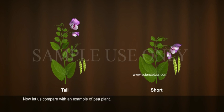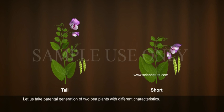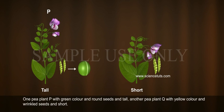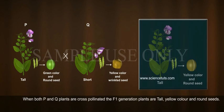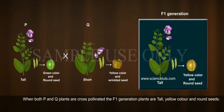Now, let us compare with an example of a pea plant. Let us take the parental generation of two pea plants with different characteristics. One pea plant, P, with green color, round seeds, and tall. Another pea plant, Q, with yellow color, wrinkled seeds, and short.